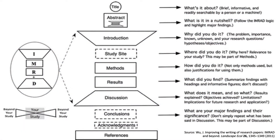The IMRAD structure has a lot packed into it, and this example presented by Wu in 2011 is a really great way to highlight what each section of the IMRAD hourglass structure should do — what is the purpose of a title, an abstract, an introduction, and so forth. If we understand the purpose of each of these sections, we get a better understanding of the relationships between these different parts and how they form the overall complex whole of our scientific writing.